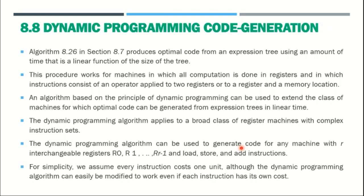The modified algorithm is based on the principle of dynamic programming. It can be used to extend the class of machines for which optimal code can be generated from expression trees in linear time. In dynamic programming, a broad class of registers is applied — an efficient number of registers — whereas the previous optimal code generation algorithm had only a limited number of registers.